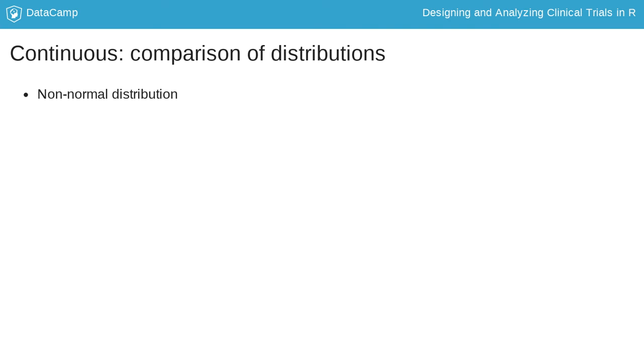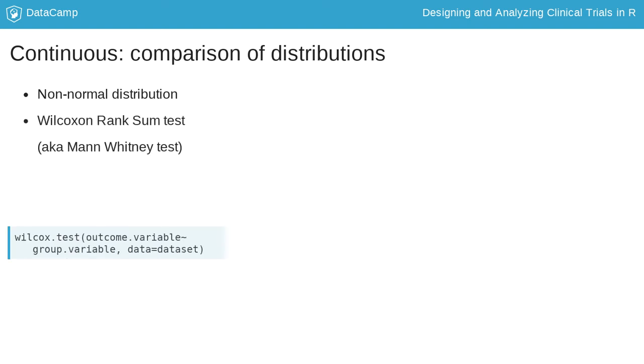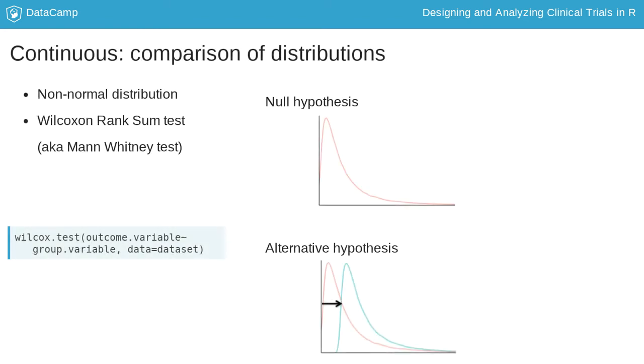If we have a non-normal distribution, presenting means is not appropriate, as they are affected by skewness. Here we can use the Wilcoxon rank sum test. The null hypothesis is that the distributions of the two populations are the same, and the alternative hypothesis is that there is a left or right translation shift.